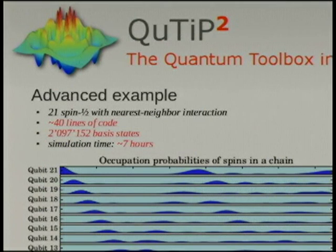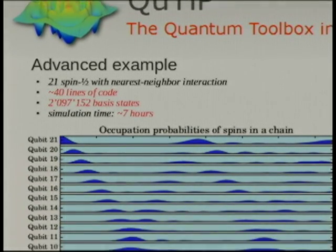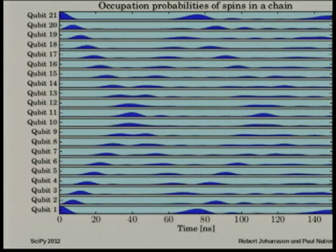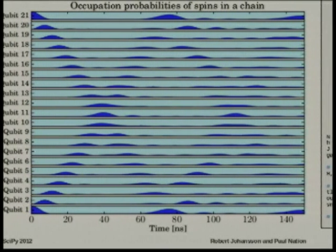That's a slightly more complicated example just to show that even as we add some more complexity to the models, the QuTiP code for programming is quite compact and it's easy to define more complicated systems. Here is a system of 21 coupled spin one-half particles in a chain with nearest neighbor interaction. Behind the scenes here it's a very large quantum system with over two million basis states. So this takes about seven hours to simulate with our toolbox. But even if it's a complicated system it's quite easy to program it in QuTiP.